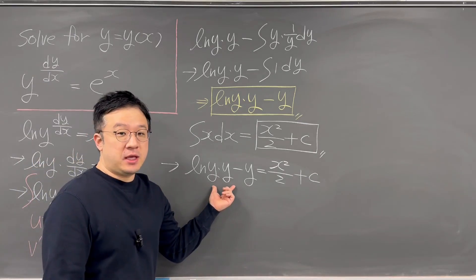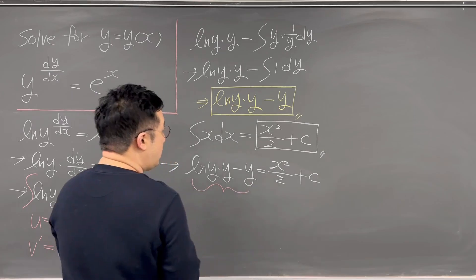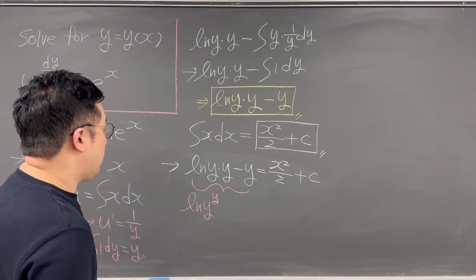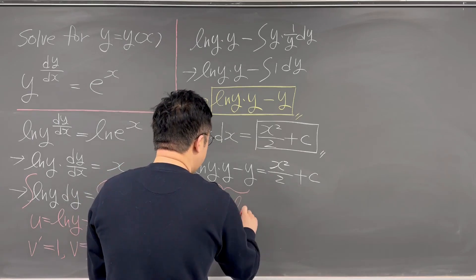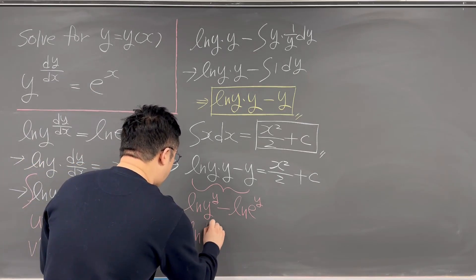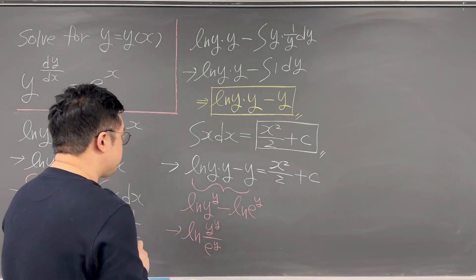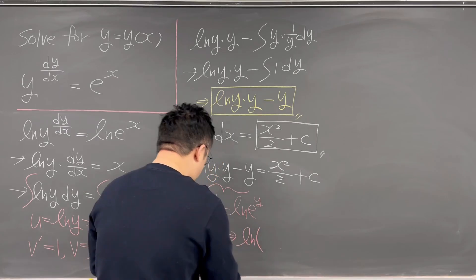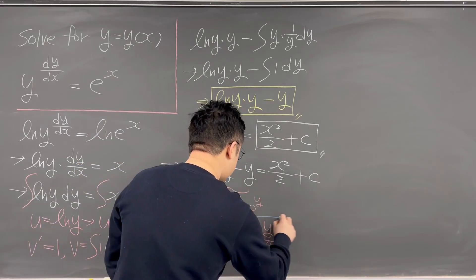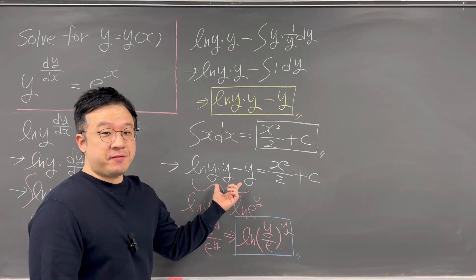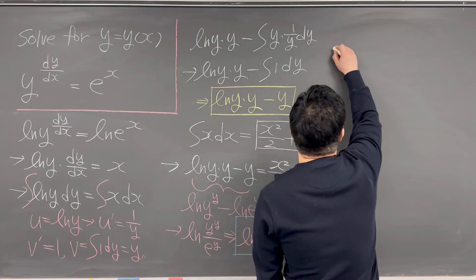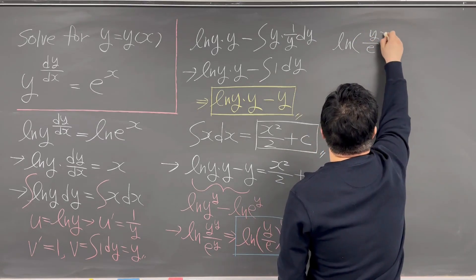Let's rewrite the left-hand side. We have ln(y) times y, which using log properties becomes ln(y^y). Then the minus y term can be written as minus ln(e^y). Combining into a single log, this is ln(y^y / e^y), which simplifies to ln(y/e)^y, or equivalently ln(y/e^y). So the equation becomes ln(y/e^y) equals x²/2 plus C.